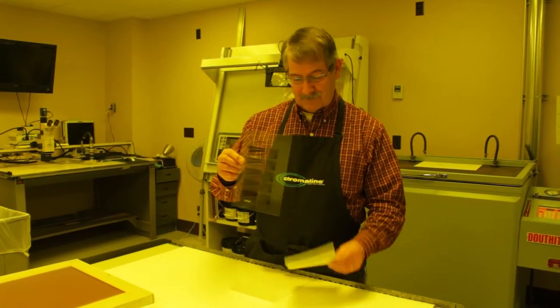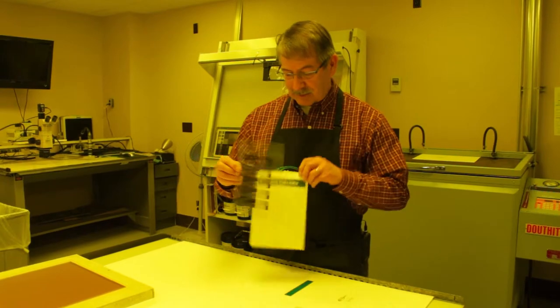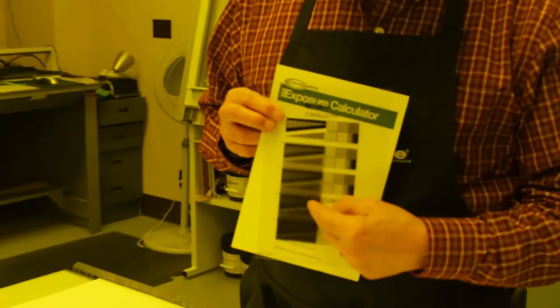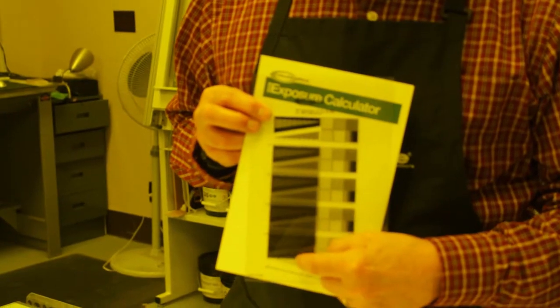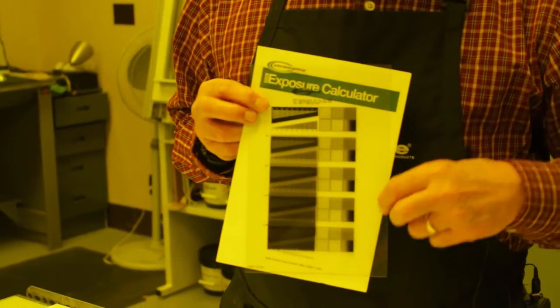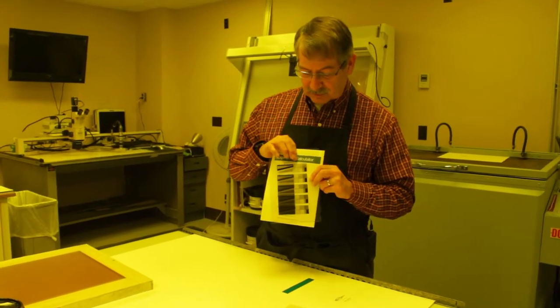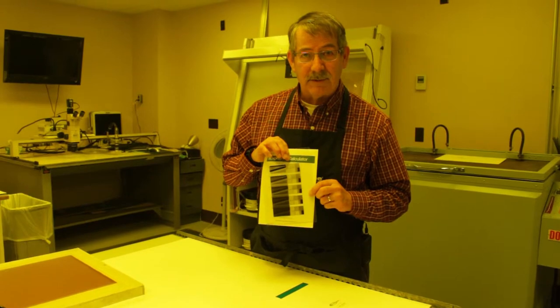This just happens to be it right here. Just put this up against here a little bit so you can see better. As you can see here, we have the film here and then we have some images on this side too. It's known as a dual calculator because you can use it the standard way or you can use a step test, and I'm going to show you how to use both.